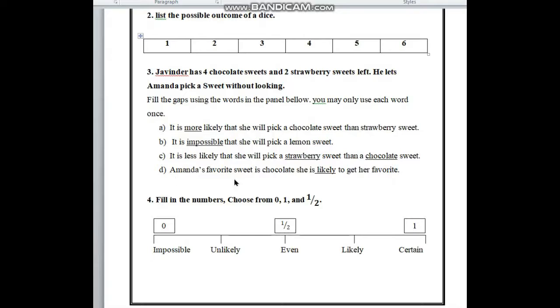In number D, Amanda's favorite sweet is chocolate. She is likely to get her favorite. Her favorite sweet is chocolate, so she is likely to get her favorite. Here we have to write likely.